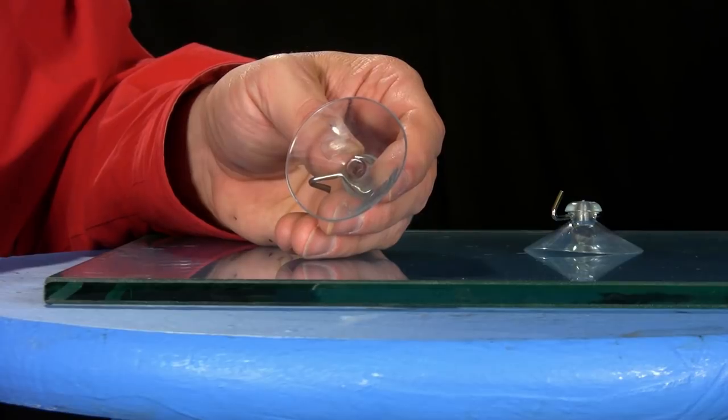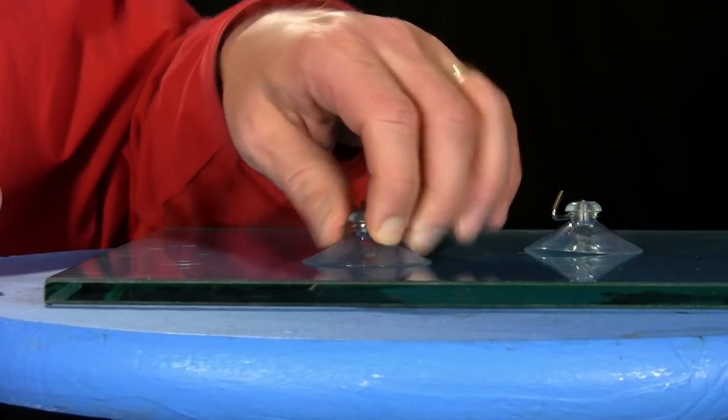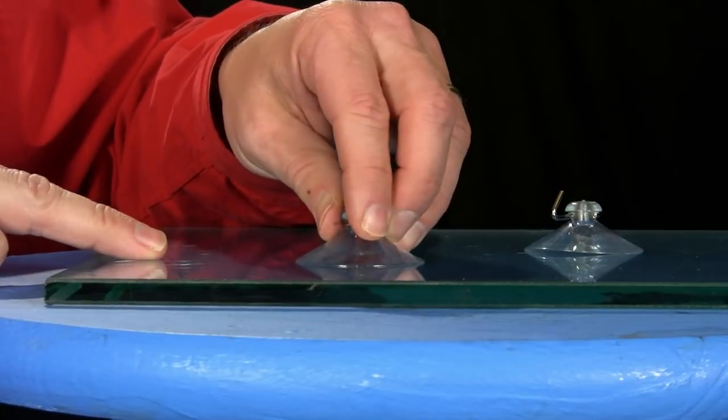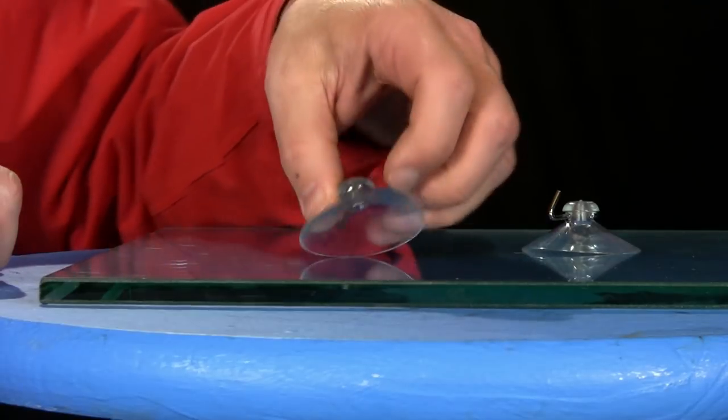Here is another very pretty thing, a suction cup. If I clamp it upon the glass, you can see at once it holds. I can easily slip it about, and if I pull it up, it pulls the glass plate with it. Only when I lift the edge can I get it off. Why does it hold? It is only kept down by the pressure of the atmosphere above.